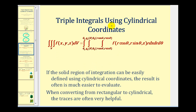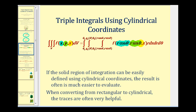Now let's talk about converting a triple integral in rectangular form to cylindrical form. The function f(x, y, z) must be written as f(r·cosθ, r·sinθ, z). So to convert the rectangular equation to a cylindrical equation, we replace x with r·cosθ, y with r·sinθ, and z remains z.